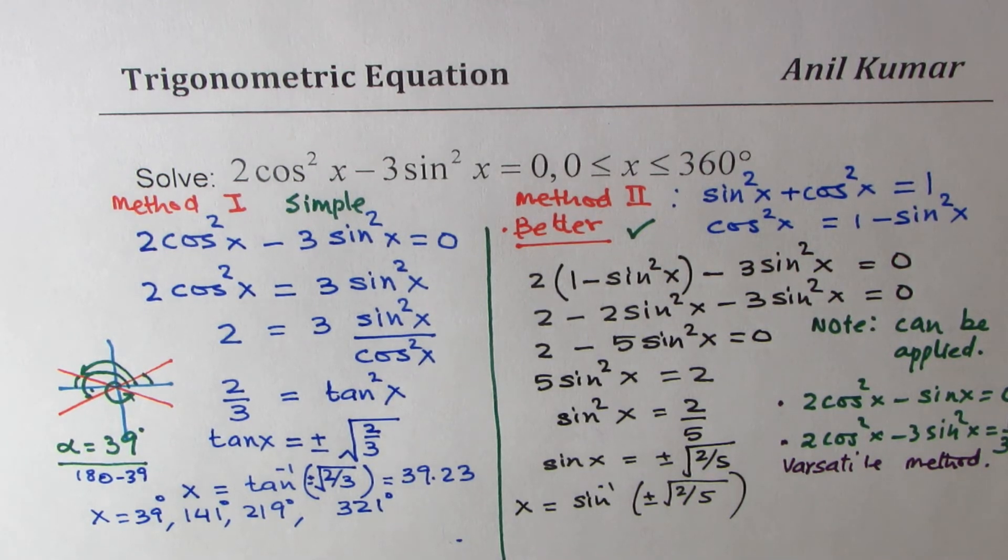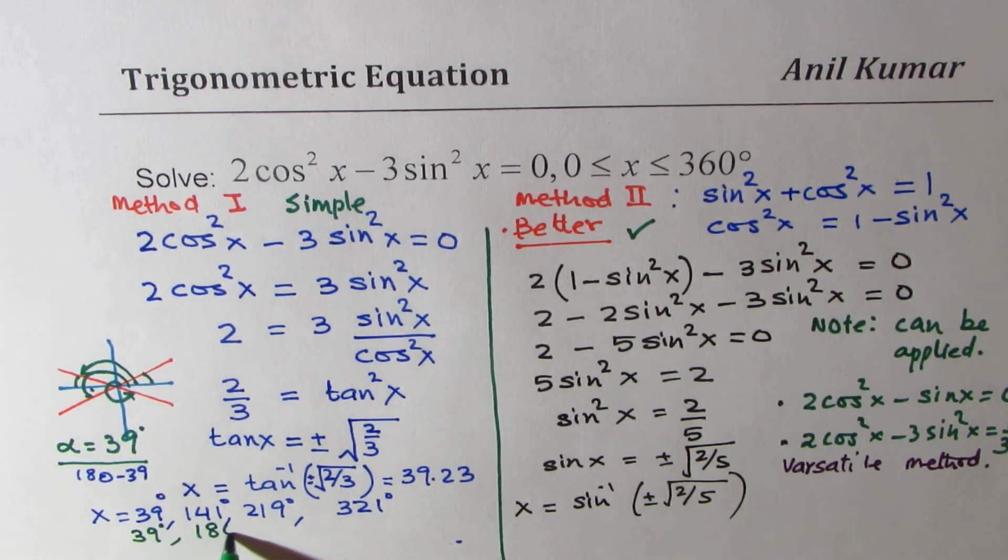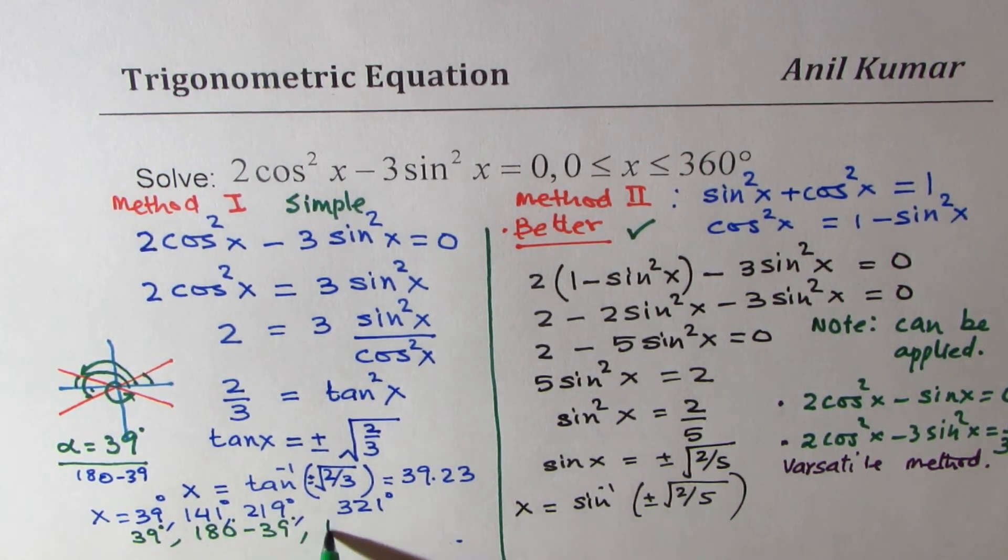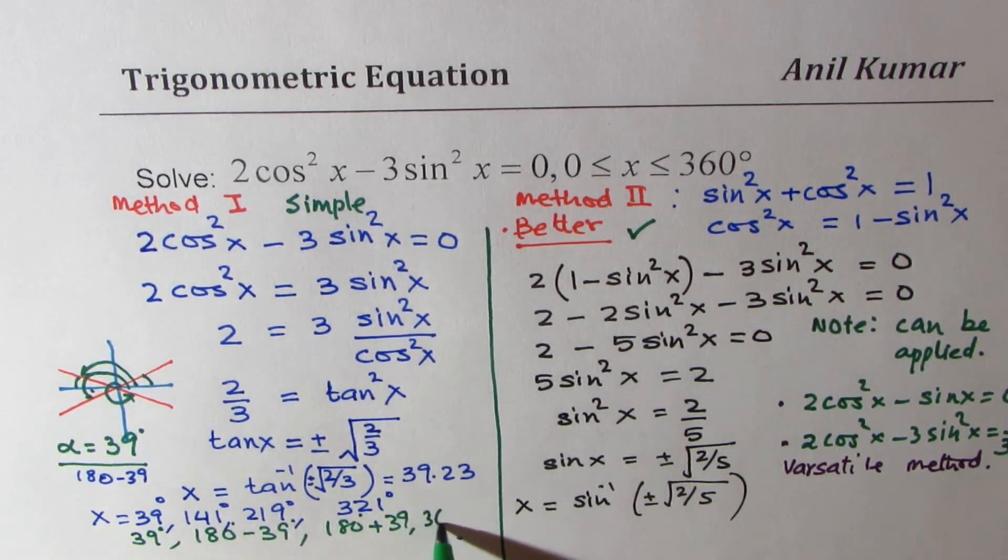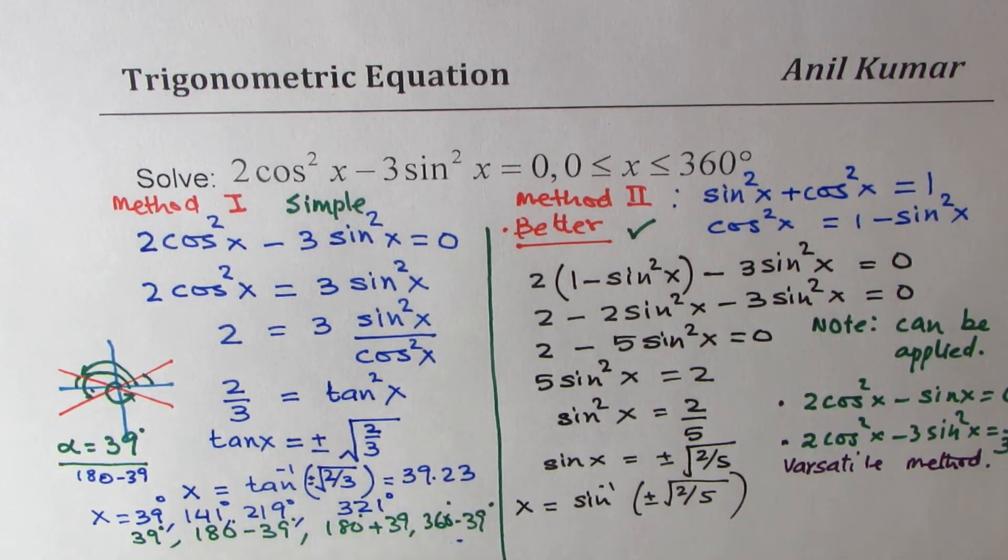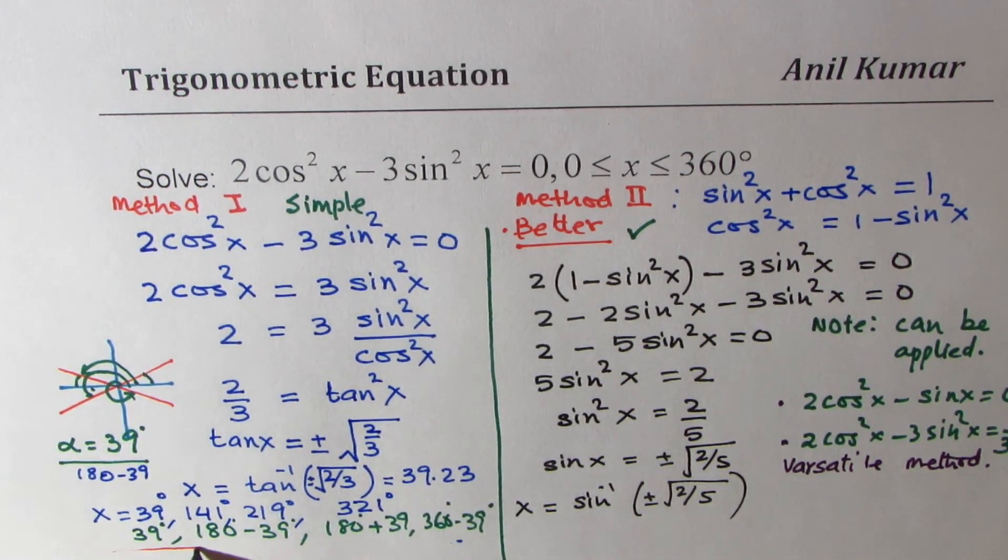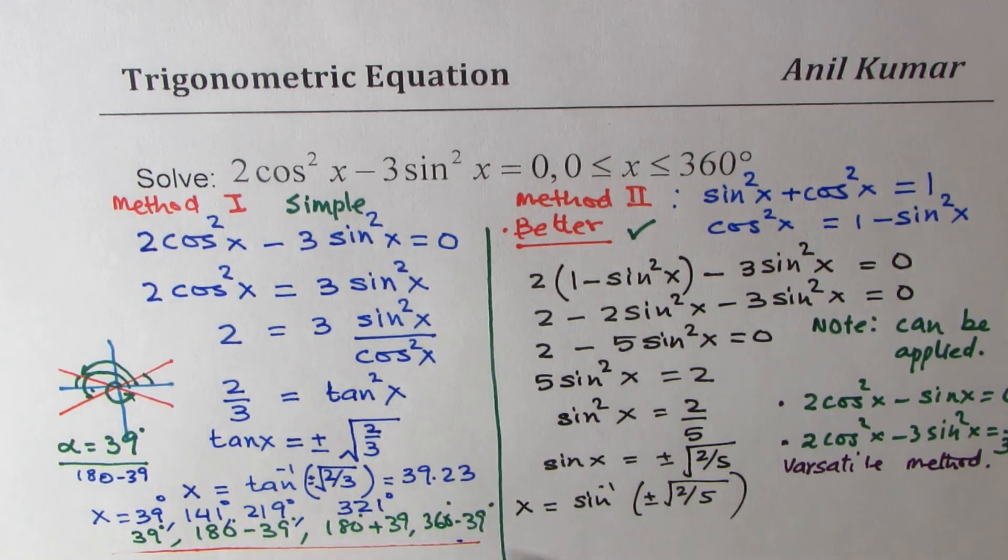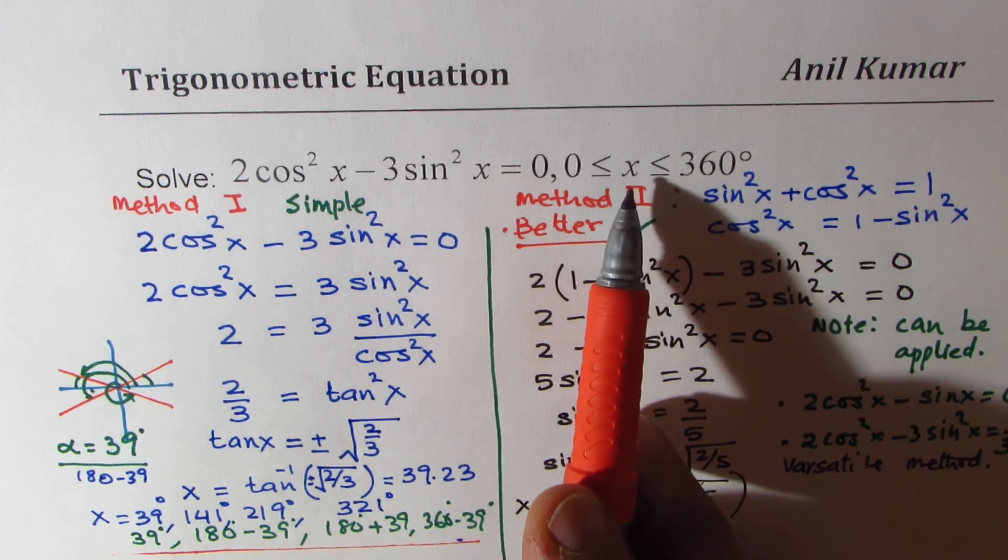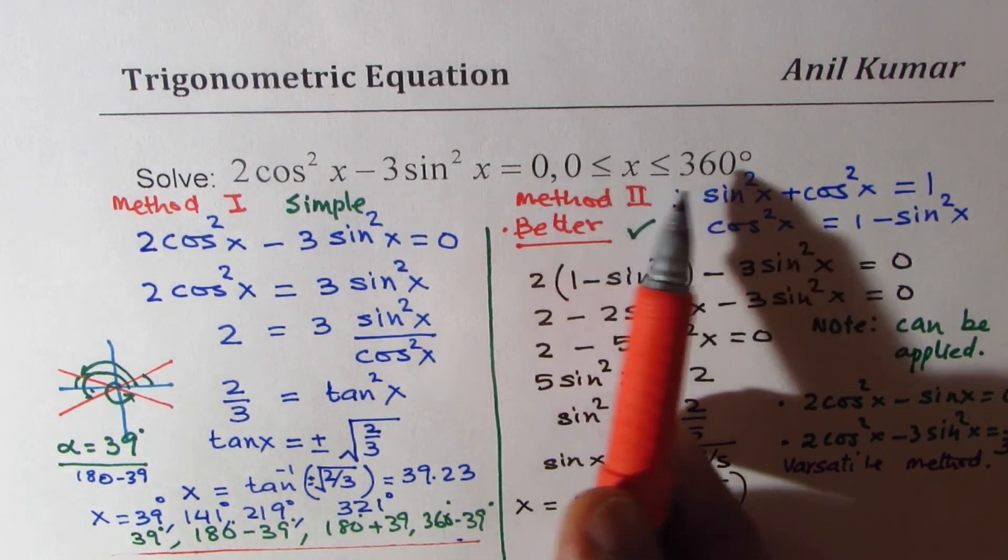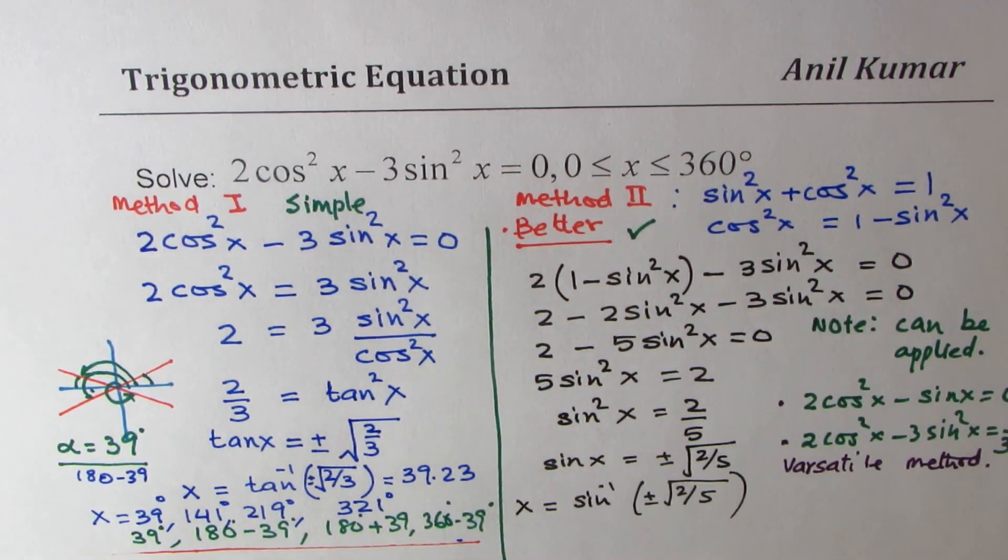The answers which we got are 39 degrees, 180 - 39 degrees, 180 + 39 degrees, and 360 - 39 degrees. It is very important to understand that all four answers should be provided for this type of solution, since we are looking for a solution in the domain of 0 to 360 degrees.